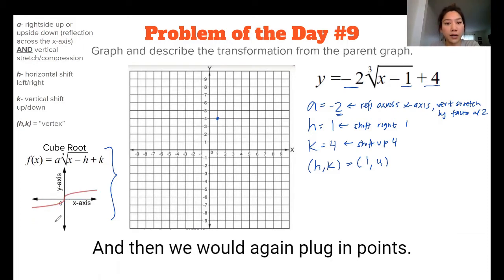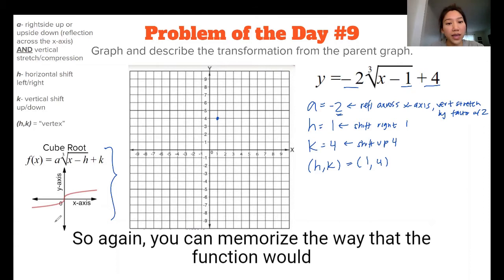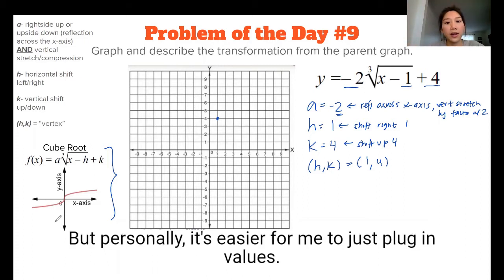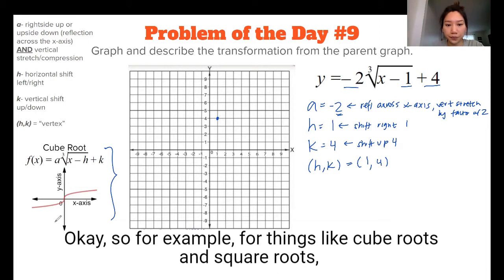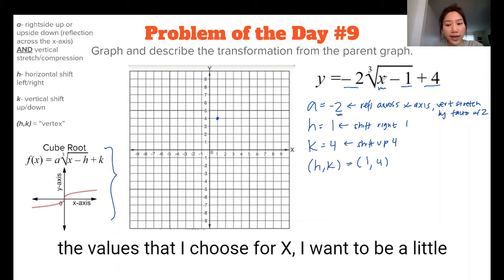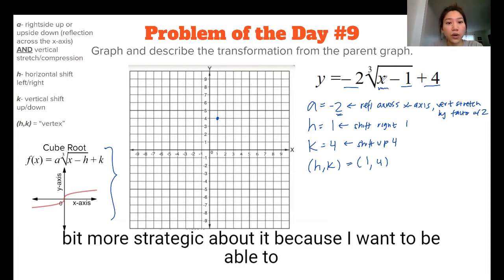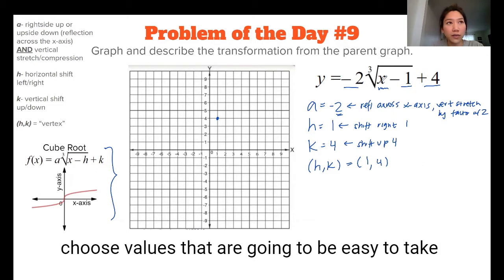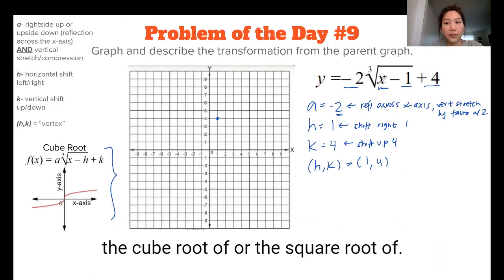And then we would, again, plug in points. So again, you can memorize the way that the function would work and then use that to do transformations. But personally, it's easier for me to just plug in values. So for example, for things like cube roots and square roots, the values that I choose for x, I want to be a little bit more strategic about it, because I want to be able to choose values that are good, or that are going to be easy to take the cube root of or the square root of.